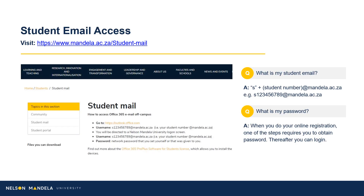Student Email Access. Email being the institution's primary medium of communication, we advise that you set up your email address as soon as possible. Please visit the link provided on screen to access your student email. Your student email address begins with the letter S for student, followed by your student number at mandela.ac.za. The password requested would be the one obtained or created in Step 11 of this registration process.